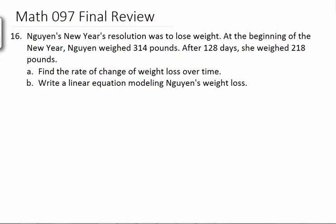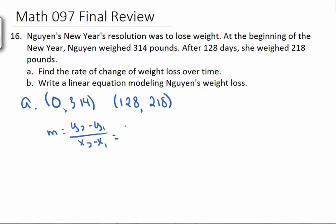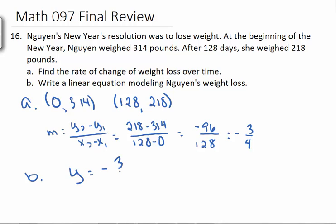At the beginning of the new year, she weighed 314 pounds. And after 128 days, she weighed 218 pounds. We want to find the rate of change. So rate of change is just slope. At time zero, she weighed 314 pounds. At 128 days, it was 218. So our slope is y2 minus y1 over x2 minus x1. So we have 218 minus 314 all over 128 minus zero. So 218 minus 314 gives us negative 96 all over 128. And if you reduce that, you get negative 3 quarters. So that's the rate of change. B wants a linear equation. Well, we have just found the slope, and then we need plus the y-intercept, which in this case is 314.